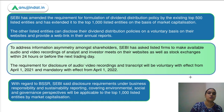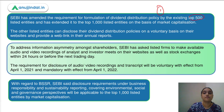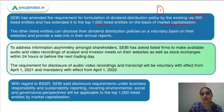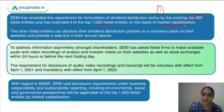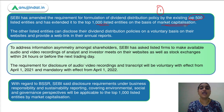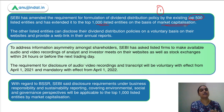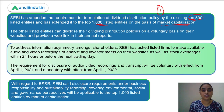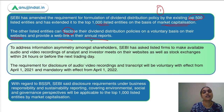Regarding the dividend distribution policy: earlier it was mandatory only for top 500 listed entities, but now it has been extended to the top 1000 listed entities on the basis of market capitalization — that is, current share price multiplied by shares outstanding. These entities must not only formulate this policy but also disclose it on their websites, with a link provided in their annual reports.